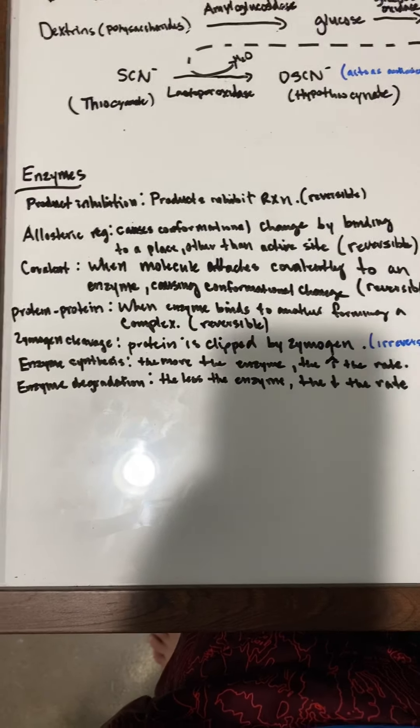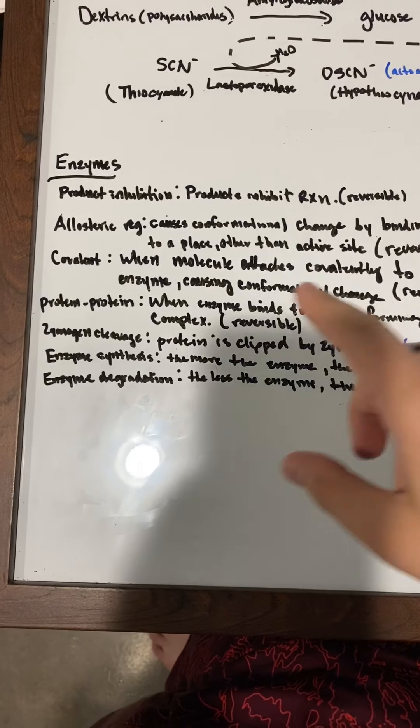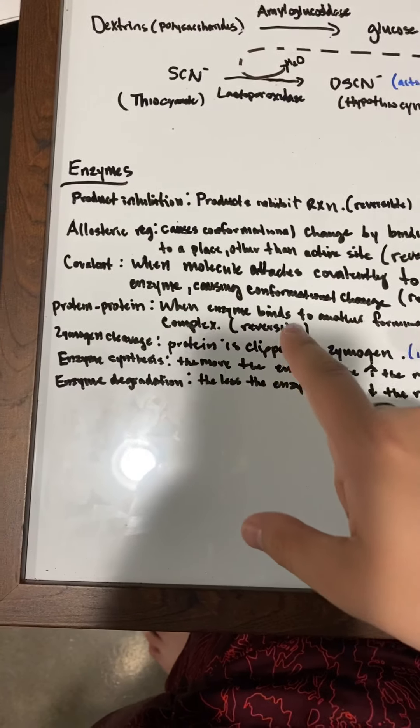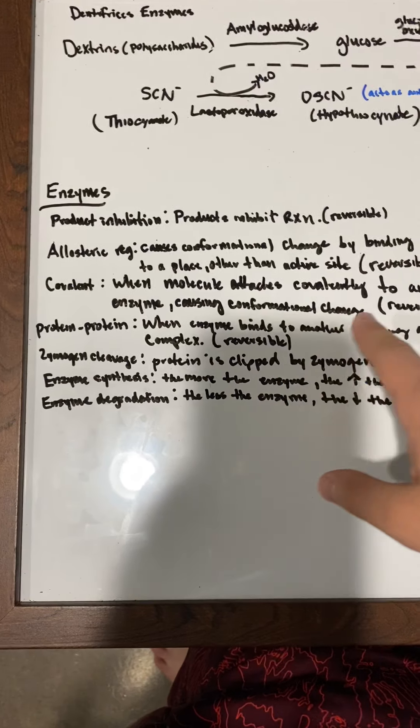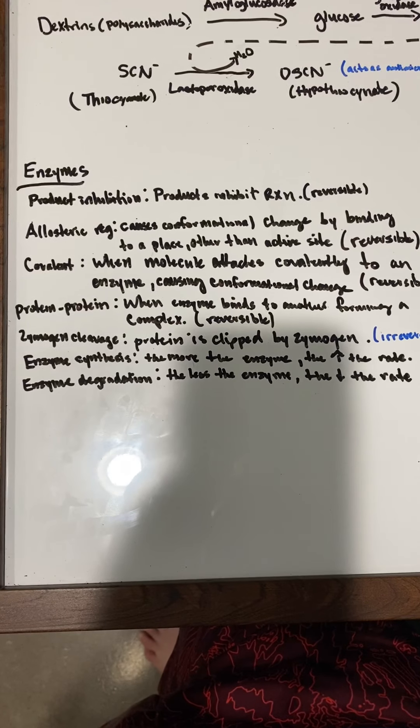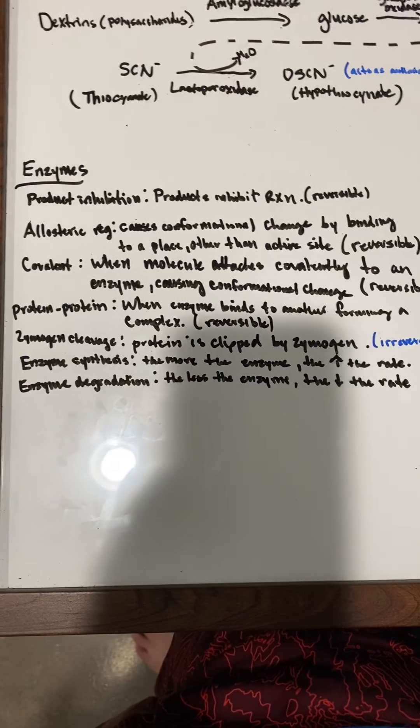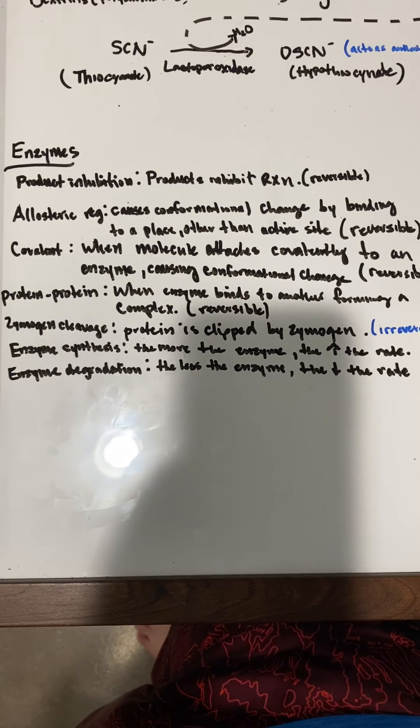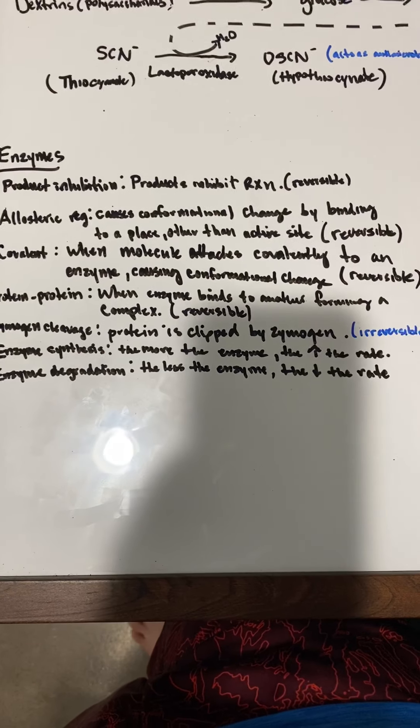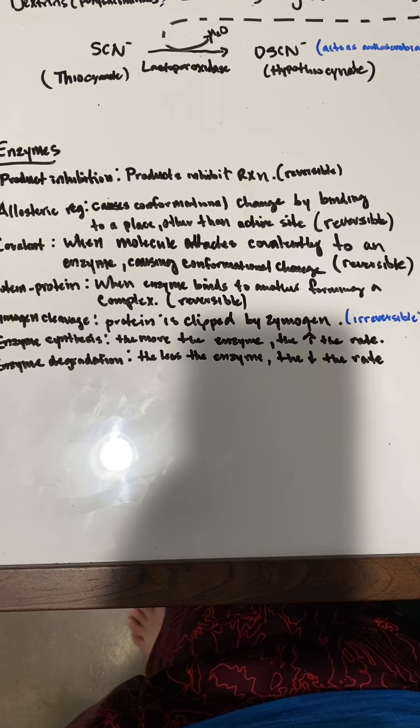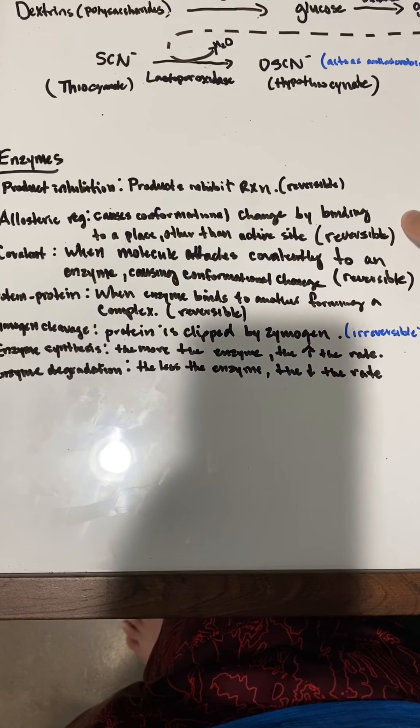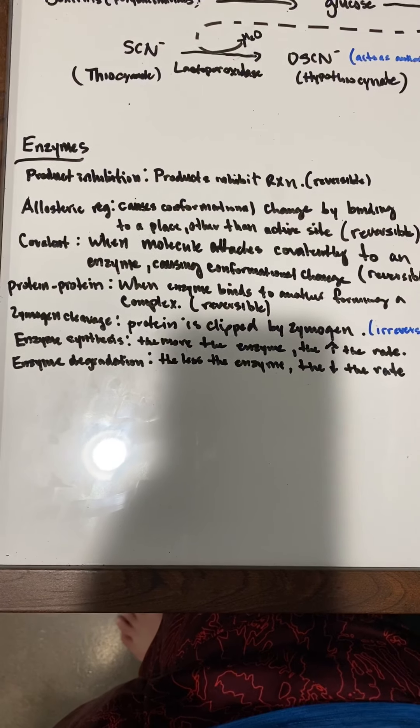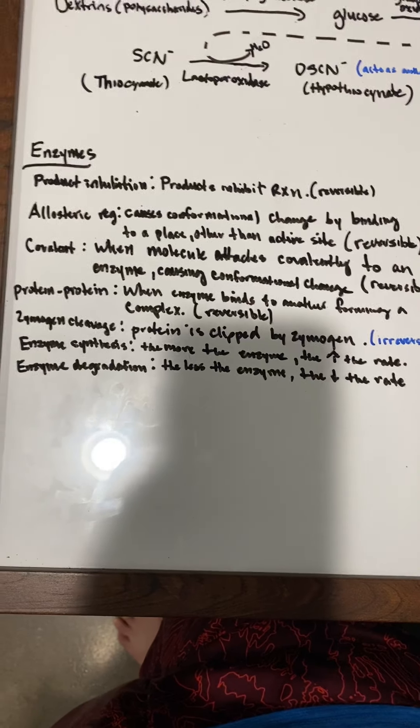Then we have covalent regulation, when a molecule attaches covalently to an enzyme and causes a conformational change. The difference is that this one makes a covalent bond to the enzyme, while allosteric binds to a separate place other than the active site. Covalent is still reversible.